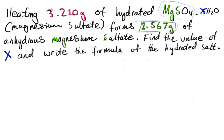I'm going to solve a problem asking me to find an unknown value x in a formula of a hydrated compound. The question describes what happens when this hydrated compound is heated to convert it into an anhydrous form. Heating 3.210 grams of hydrated MgSO4 — magnesium sulfate with x moles of H2O — forms 1.567 grams of anhydrous magnesium sulfate. We need to find the value of x.